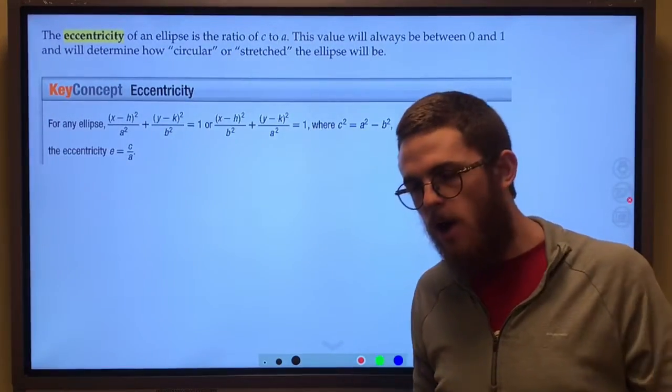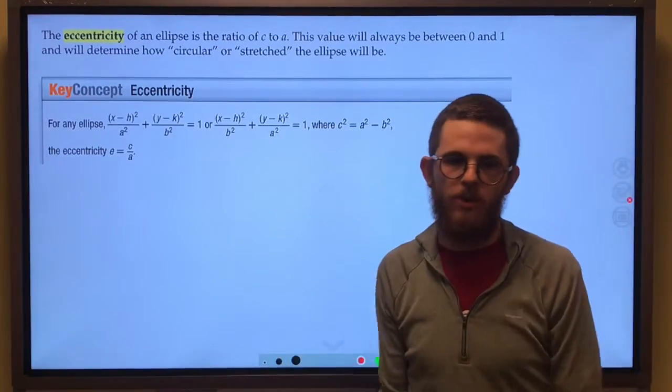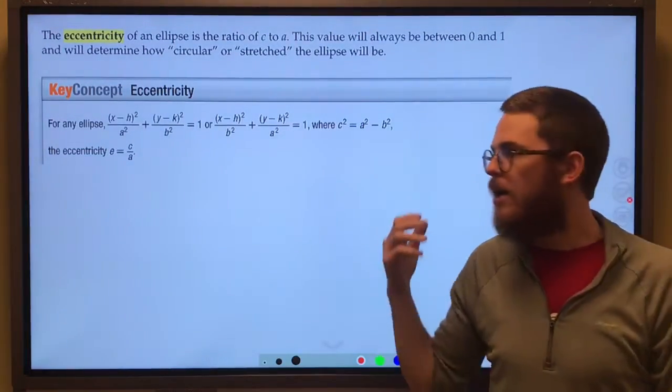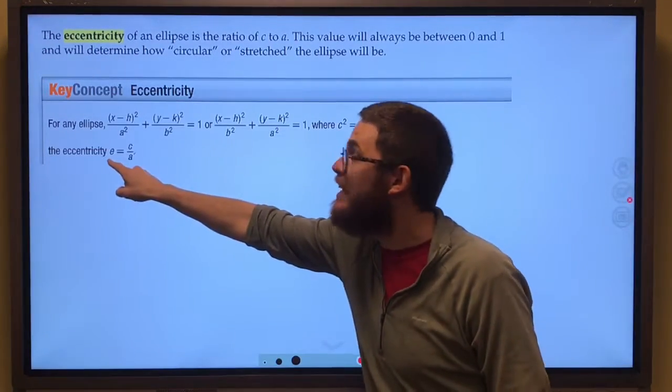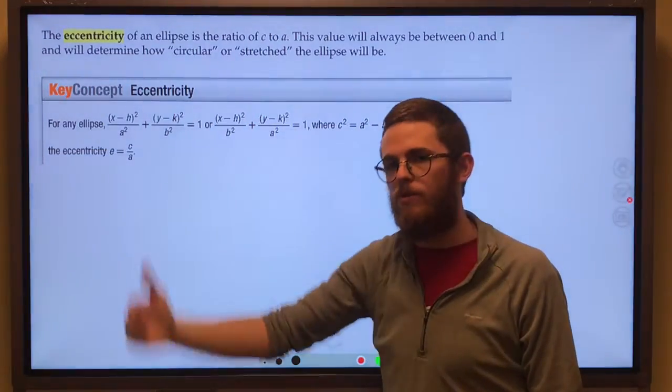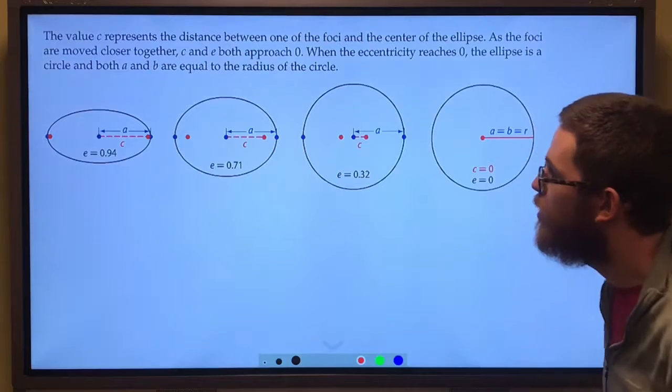Eccentricity tells us how spread out, how stretched an ellipse is going to be. Alright, so here we go. For any ellipse, the eccentricity e is equal to the ratio of c to a. Now let's look at how this affects some different ellipses.